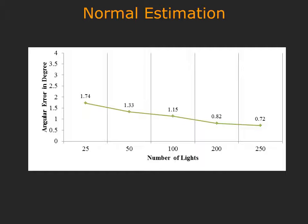On synthetic datasets, our normal estimation framework provides very precise estimates. Average errors are approximately 1.75 degrees with 25 input images and approximately 0.7 degrees once we obtain 250 images.